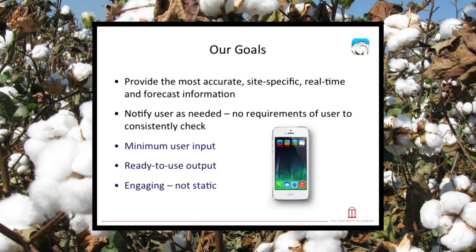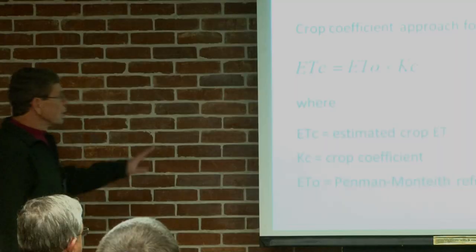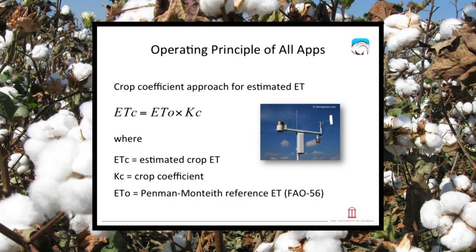These apps are designed to be user-friendly — that was the main overall objective, to make them engaging and user-friendly. All these apps are based on using evapotranspiration as the scheduling design. We're using weather stations in Georgia and Florida — 83 stations that the University of Georgia maintains and 35 that Florida maintains — to calculate theoretical evapotranspiration, then multiplying that by a crop coefficient to get the daily water use of the plant.